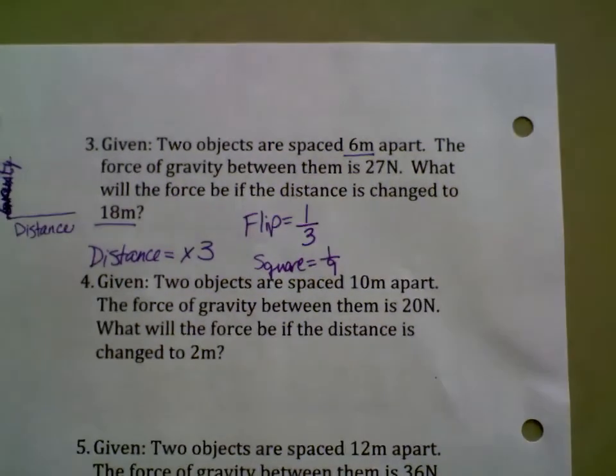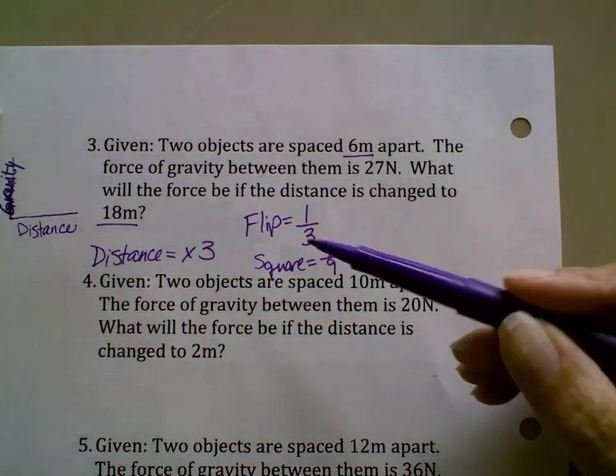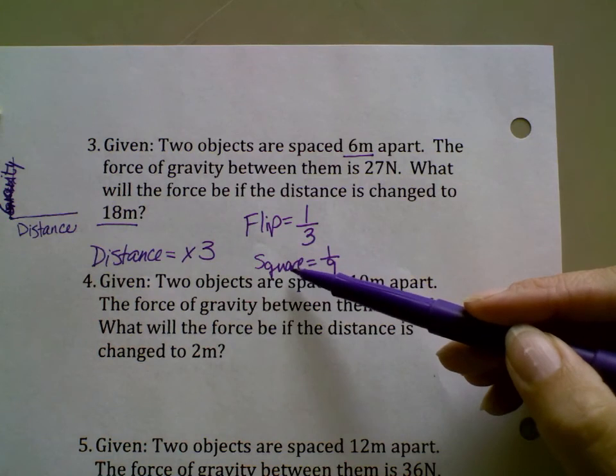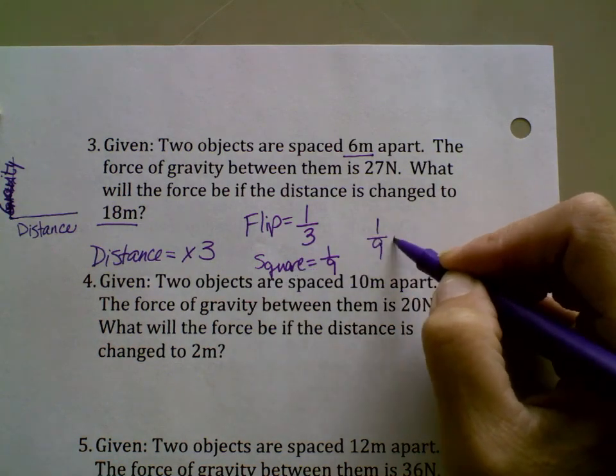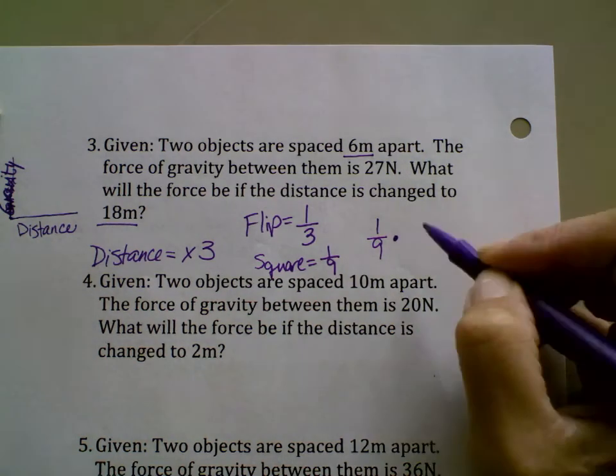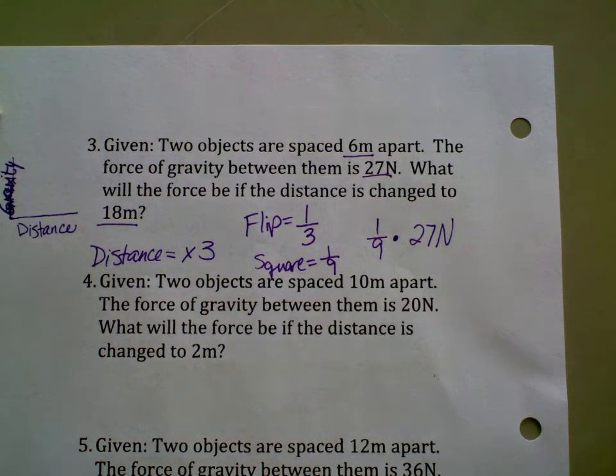So before we just whatever we did to the mass we did to the gravity, but this time we have a couple extra steps. We have to flip that number and then we square that number. This 1/9 is then what I'm going to multiply by the force of gravity. In this case it's 27 newtons, got that from right there.